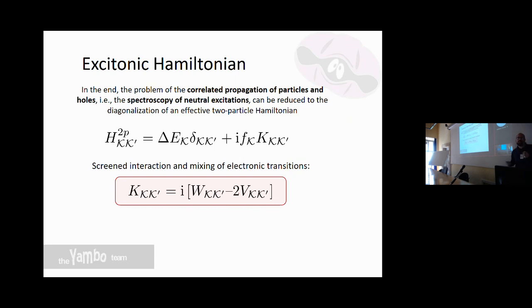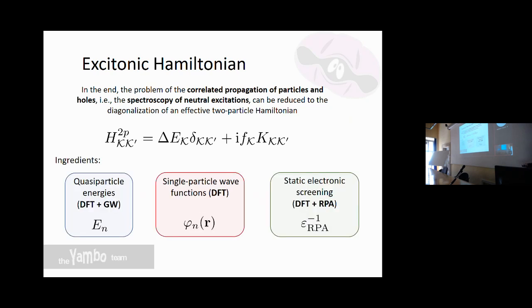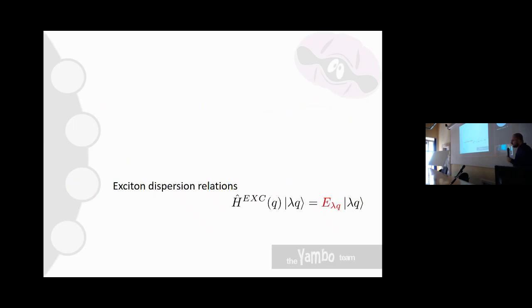This is another approach that starts from a time-domain expression with an electronic Hamiltonian and an external time-dependent field, describes the response function at the linear-response level in the time domain, and then recovers the Bethe-Salpeter equation. To compute this in practice you need quasiparticle energies at the GW level, single-particle wave functions, and the RPA screening — all computed by Yambo — which then computes the kernel, diagonalizes the BSE, and gives you the excitonic properties.